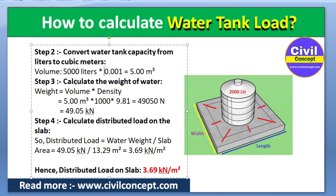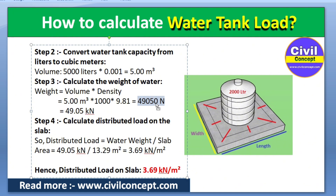In Step 3, we calculate the weight of water. Using the formula weight = volume × density, the volume is 5 cubic meters and the density of water is 1000 kg/m³. Converting to Newtons by multiplying with 9.81, we get 49,050 Newtons. Dividing by 1000 gives us 49.05 kilonewtons — this is the weight of water on the slab.